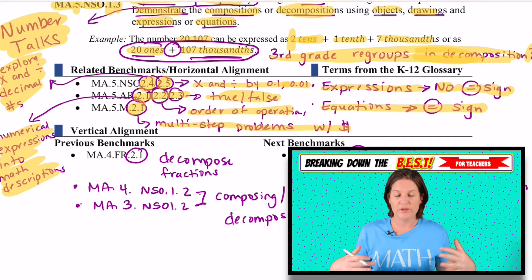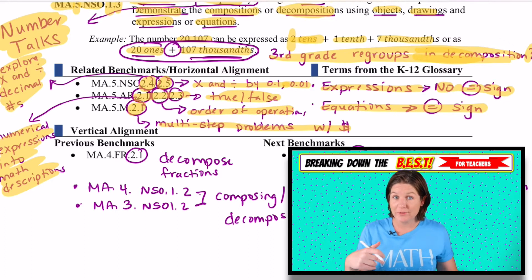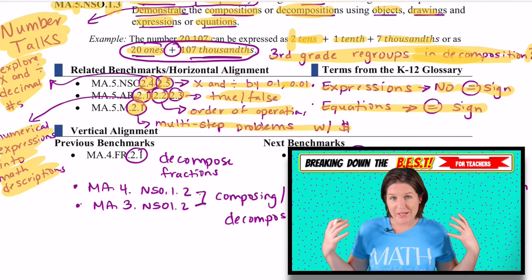For instance, right up here where they decompose the number, that is an expression. We have values and we have a symbol, a number, we have a plus sign, an operation going on there, but there is no equal sign. That's an expression. As soon as you see an equal sign, it goes from an expression to an equation. Basically, the related horizontal alignment is showing you, hey, this standard is important because knowledge of this standard is going to apply to a bunch more standards in fifth grade.